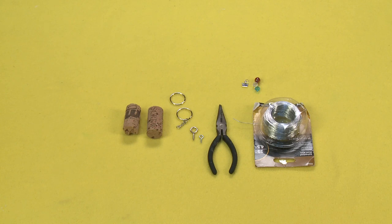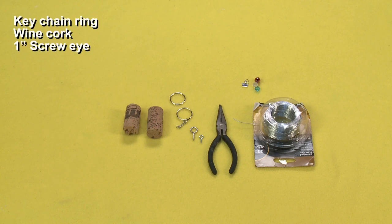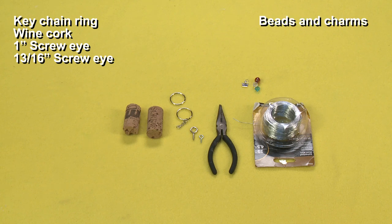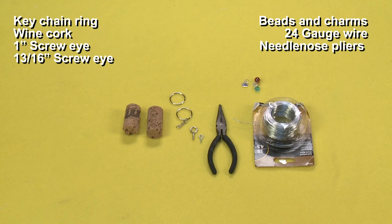And I'm going to show you how to do it right now. For this project, you will need a keychain ring, wine cork, a 1-inch screw eye, a 13/16-inch screw eye (optional), beads and charms (optional), 24-gauge wire (optional), and needle-nose pliers (optional).